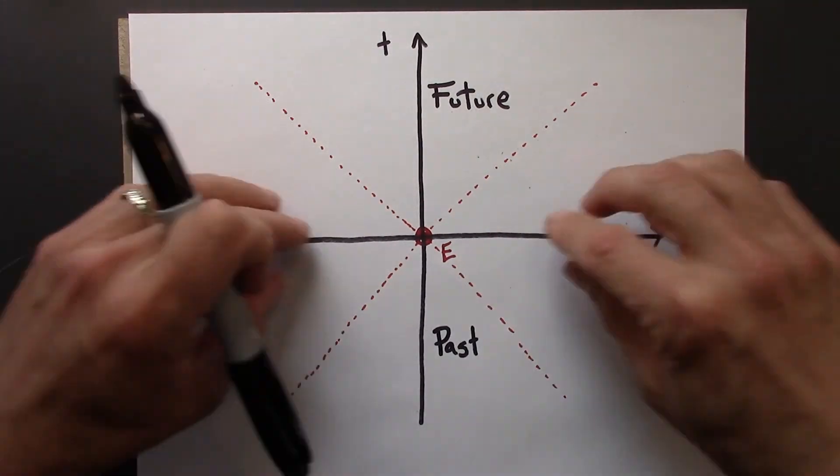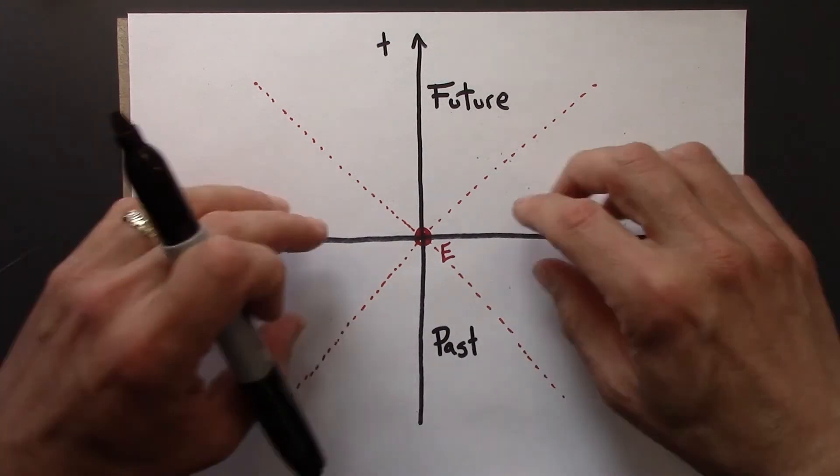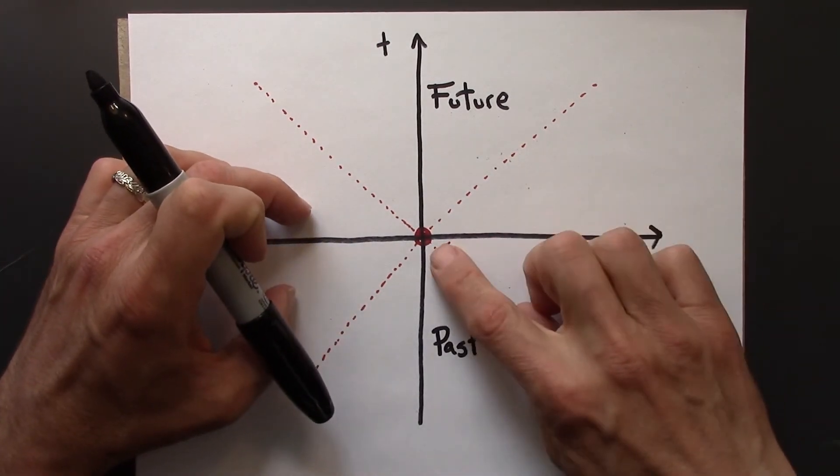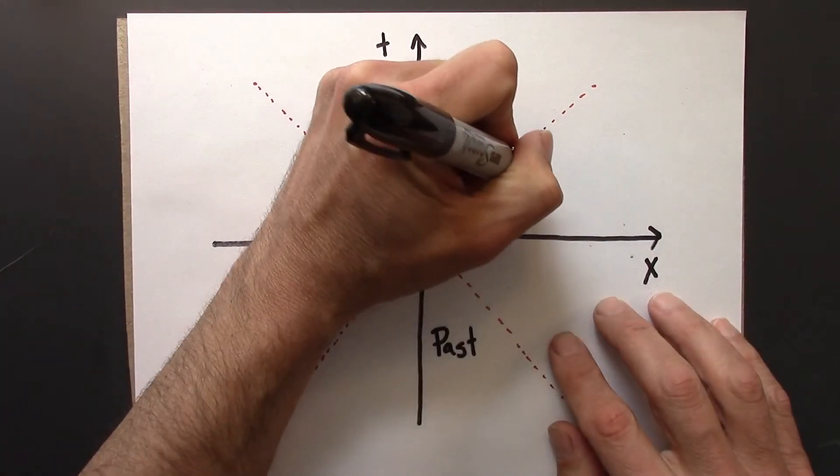So then in these regions out here, sort of look like a bow tie if I shaded it in. These are events that are not causally connected to e. They just have nothing to do with e. And this is sometimes called elsewhere.